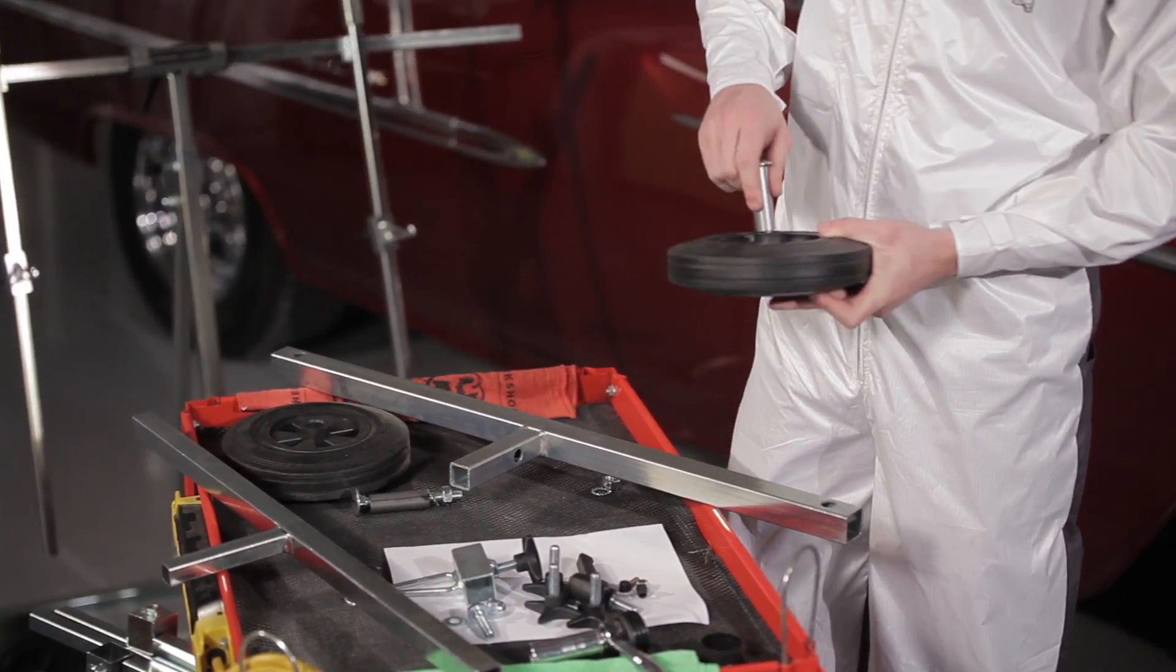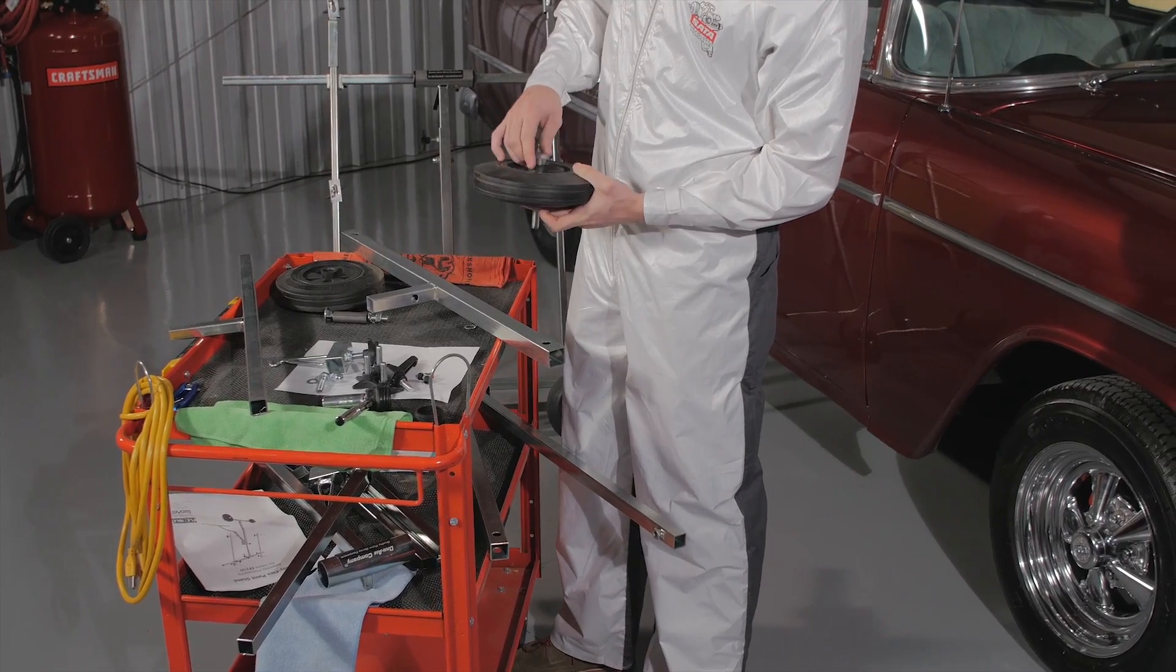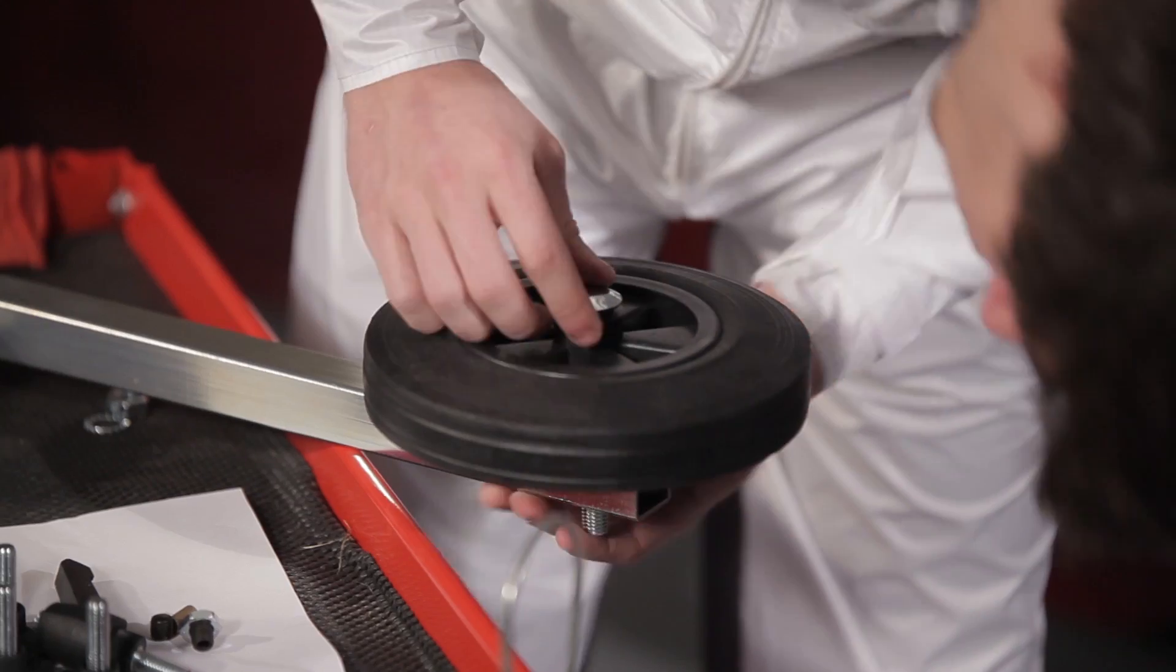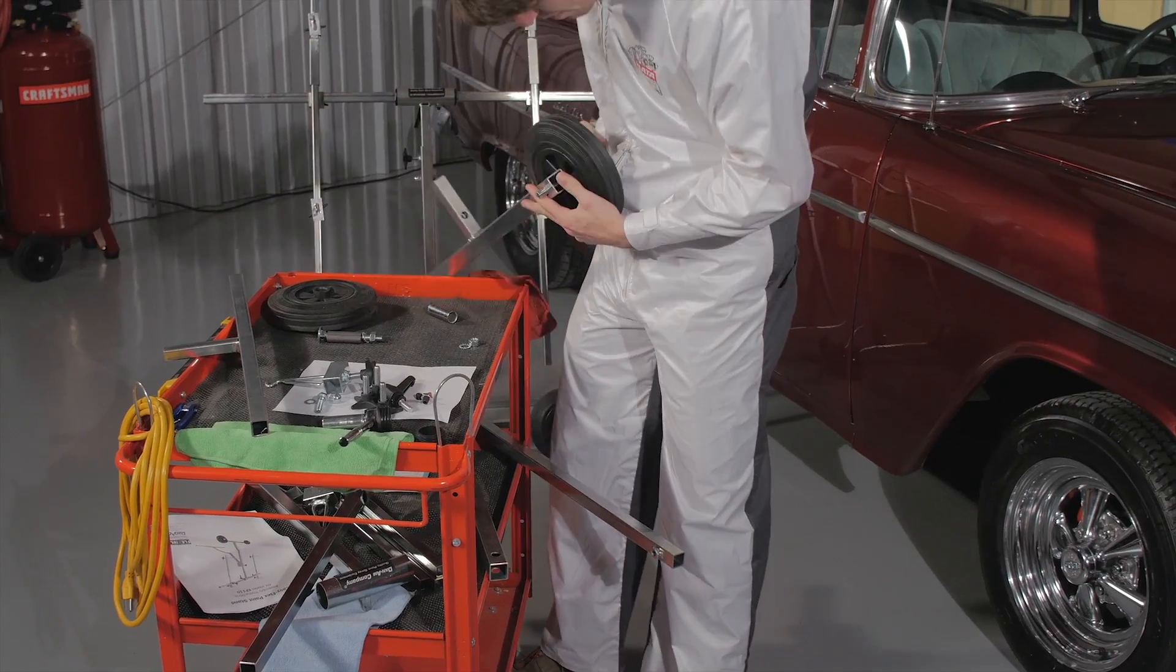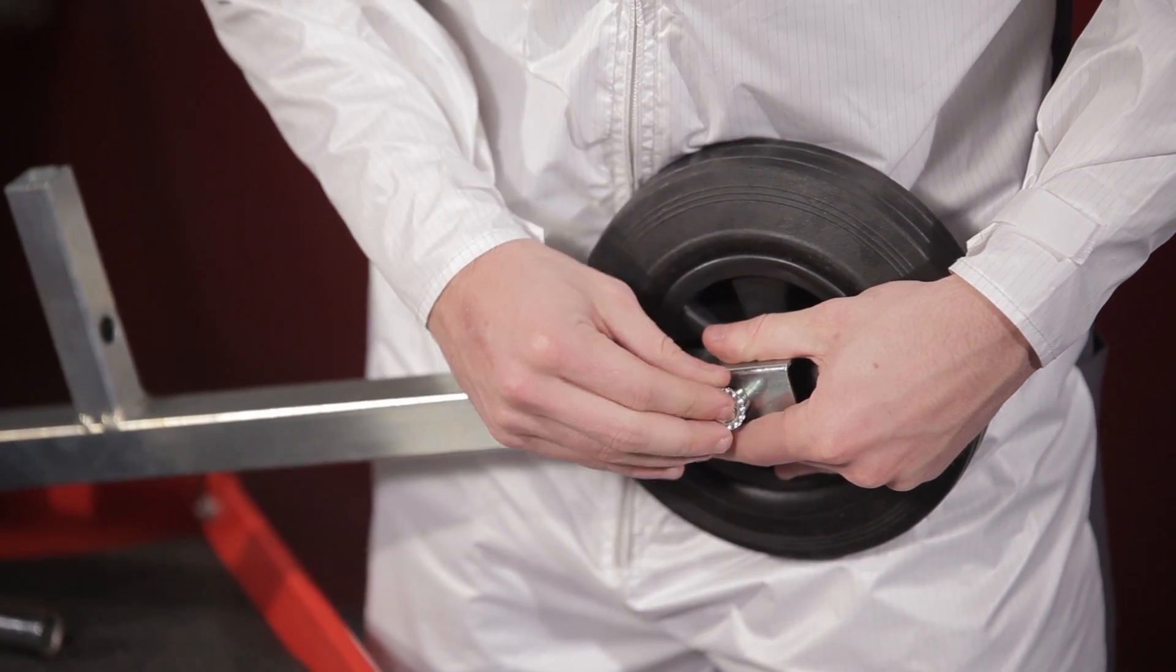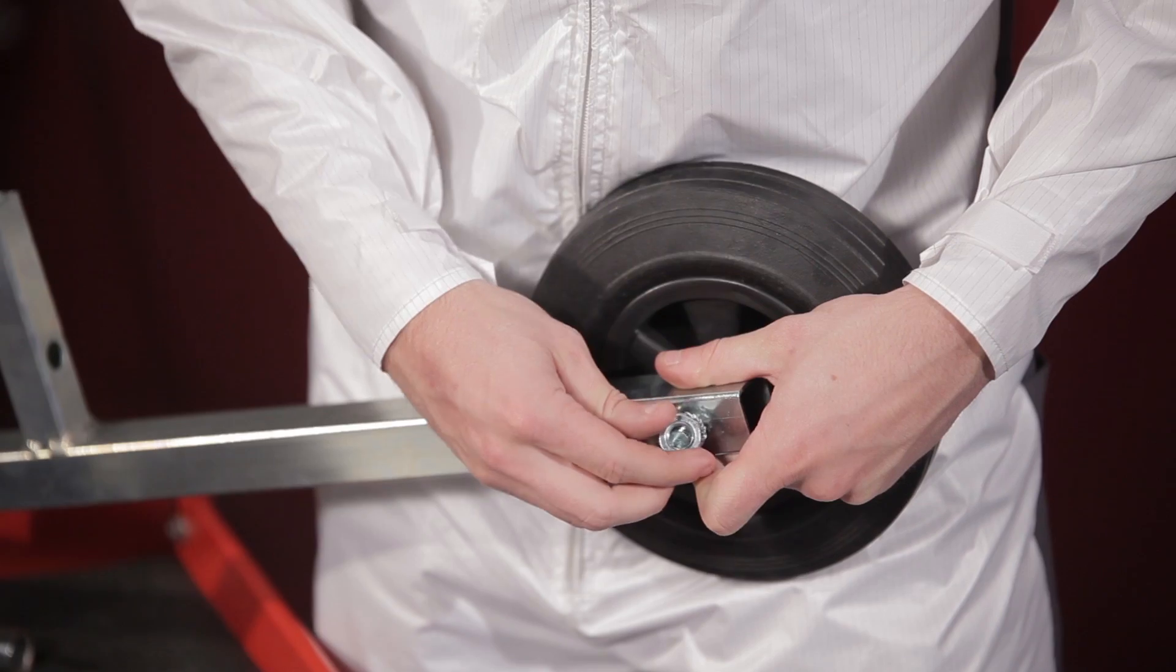Begin by attaching the wheels to the wheelbase bar. Put the wheel bolt through the bolt shaft and push those through the wheel. The bolt should be flush with the center of the wheel. Secure the bolt to the wheelbase bar by using the washers and nuts provided.